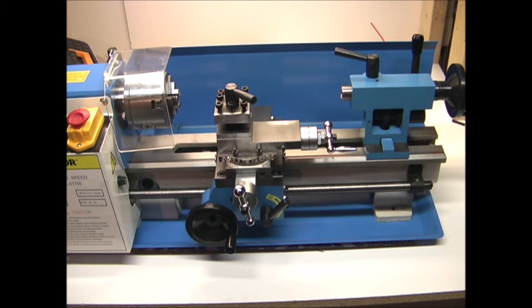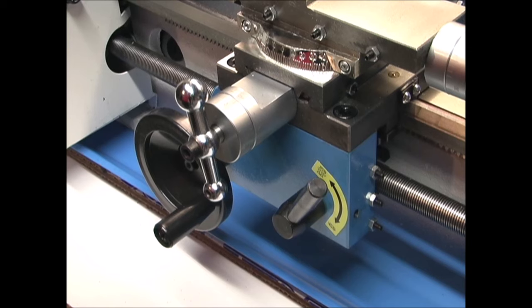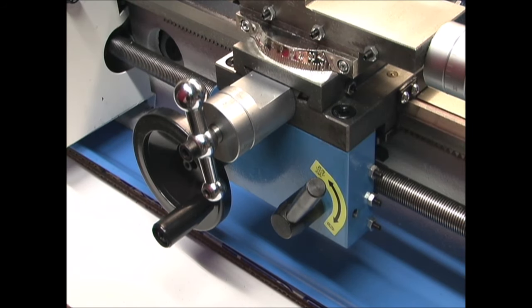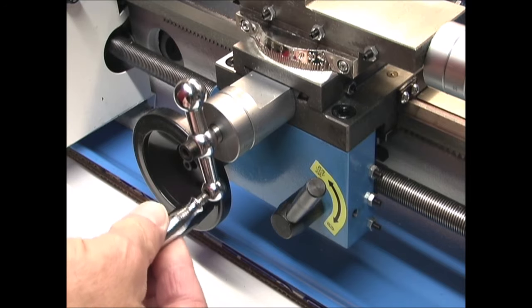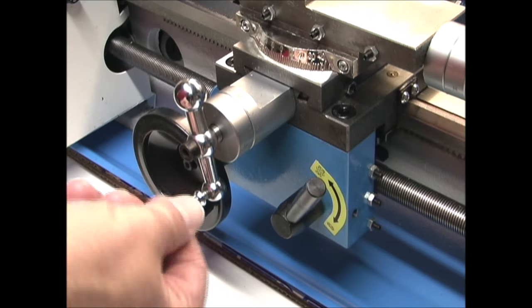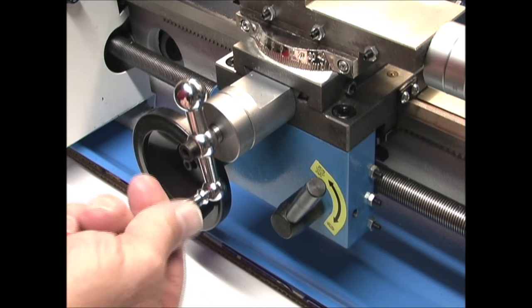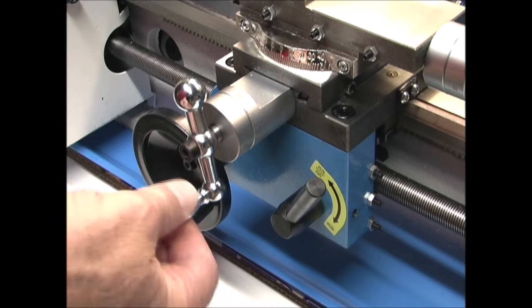I got the lathe all cleaned up, wiped all the oil off and put it on this bench. This bench is in its permanent location so I don't have it bolted down yet. Everything was pre-assembled except for the handle for the cross slide. It was probably removed for shipping because it sticks out and might get broken off.